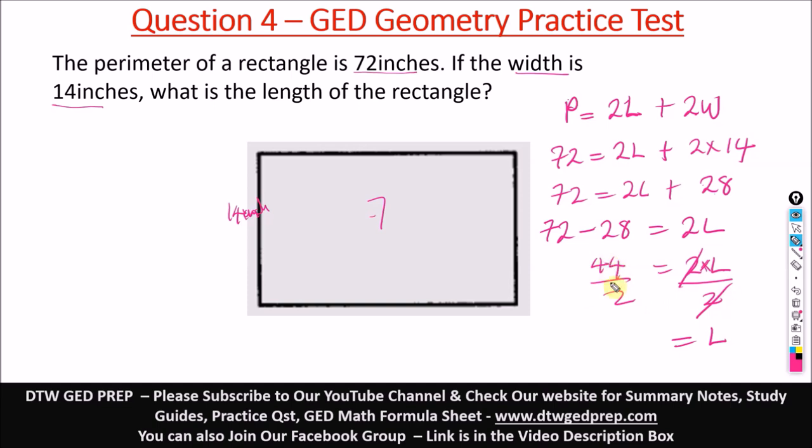Okay, so 44 divided by 2 will give us 22. So L is equal to 22 inches. Okay, so this is how you find your length of this particular rectangle, given your perimeter.